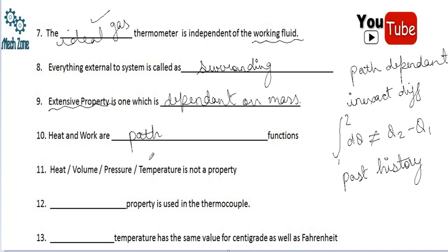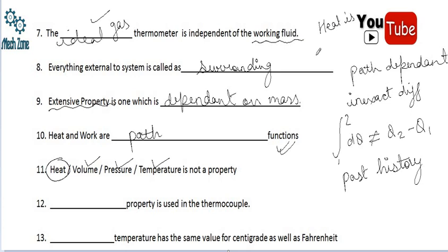Out of heat, volume, pressure, and temperature — one is not a property. Volume, pressure, and temperature are properties, but heat is not a property; rather, it is a path function. So heat is a path function — it is not a property.